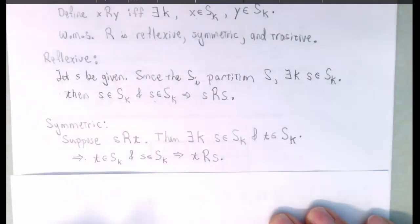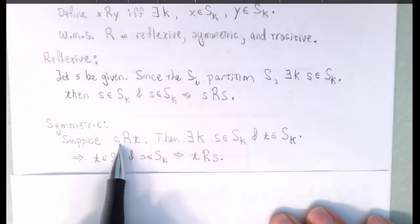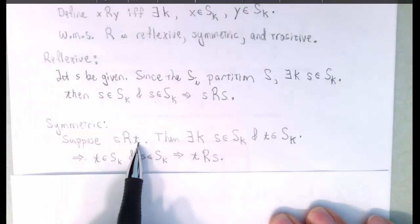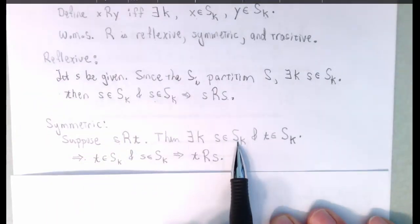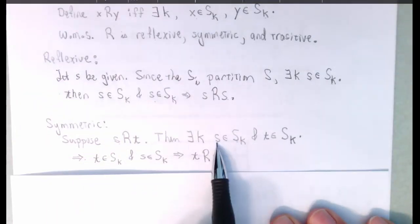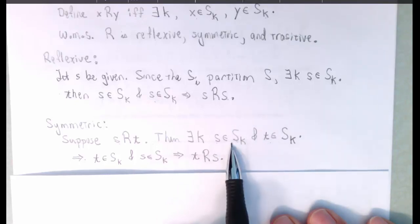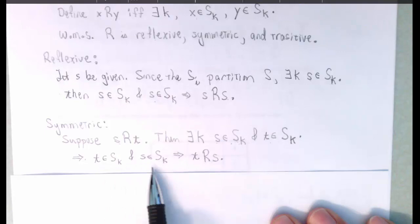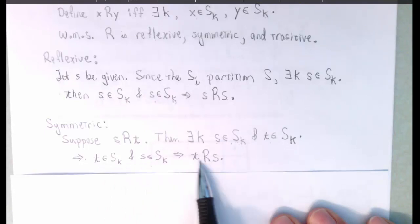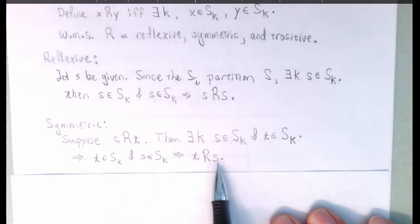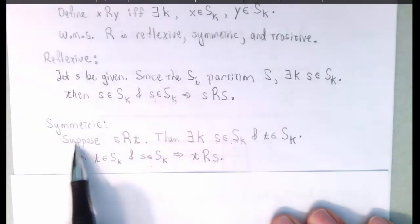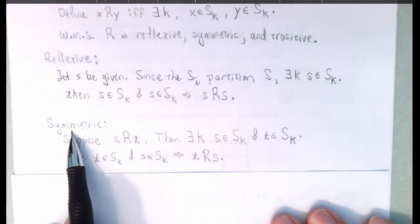For the symmetry property, suppose s is related to T. Then there has to be a subset that contains both s and T. This is true no matter which order we write it in. So if we reverse the order, we could say that T is related to s, and that's what we wanted to show. Therefore, R is symmetric.